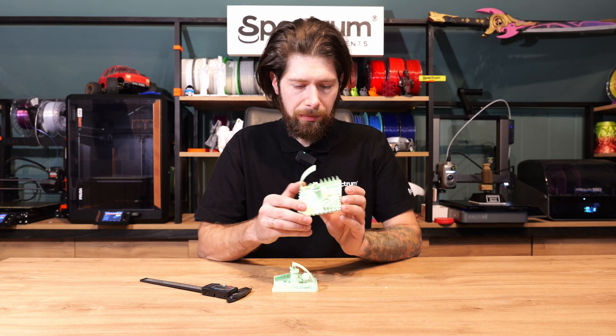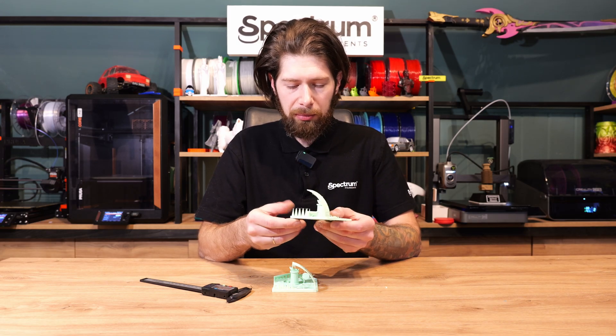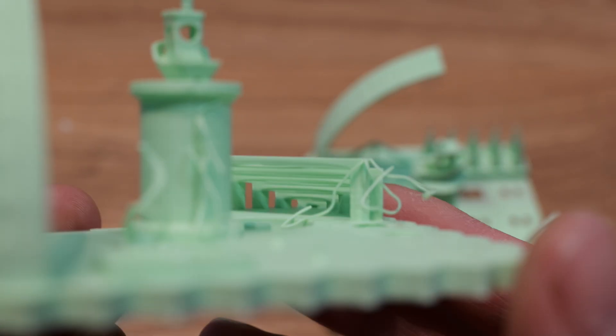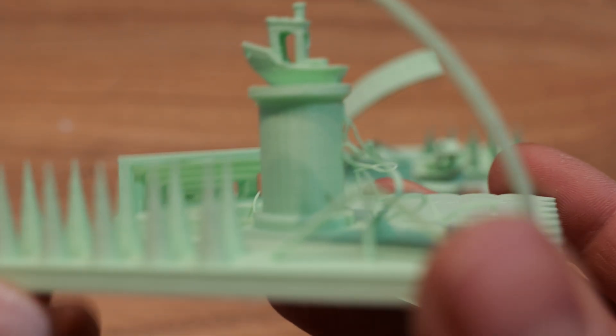Then we have the bridges. In my opinion bridges went pretty smooth. They are not sagging down so I think this was done pretty good by the A1.